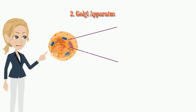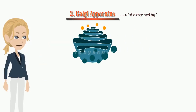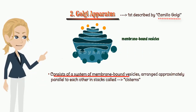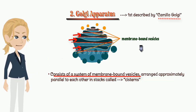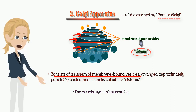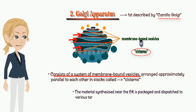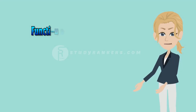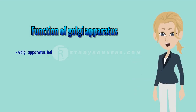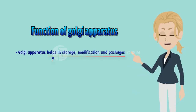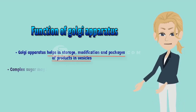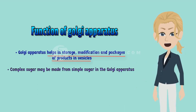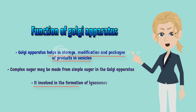The second organelle is the Golgi apparatus. It was first described by Camillo Golgi. It consists of a system of membrane-bound vessels arranged approximately parallel to each other in stacks called cisterns. The material synthesized near the endoplasmic reticulum is packaged and dispatched to various targets inside and outside the cell through the Golgi apparatus. Its functions include storage, modification, and packaging of products in vesicles. In some cases, complex sugars may be made from simple sugars in the Golgi apparatus. It is also involved in the formation of lysosomes.